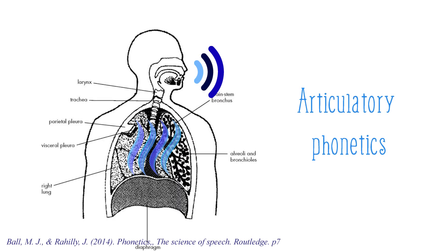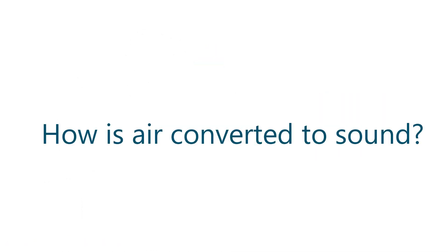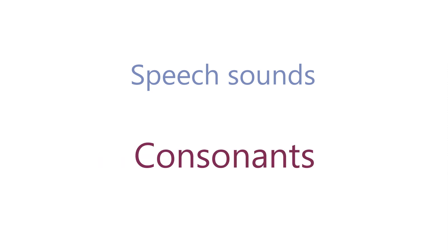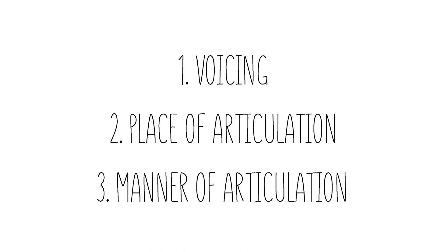Articulatory phonetics is about how air is turned into sound in the human body. Speech sounds are created by reshaping the stream of air that is pumped up by the lungs into the vocal tract. To get more specific about what happens in between, we need to divide speech sounds into two groups: consonants and vowels. To keep it simple, let's focus on consonants.